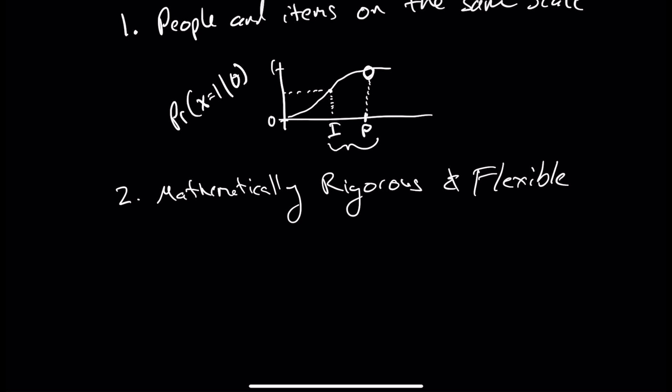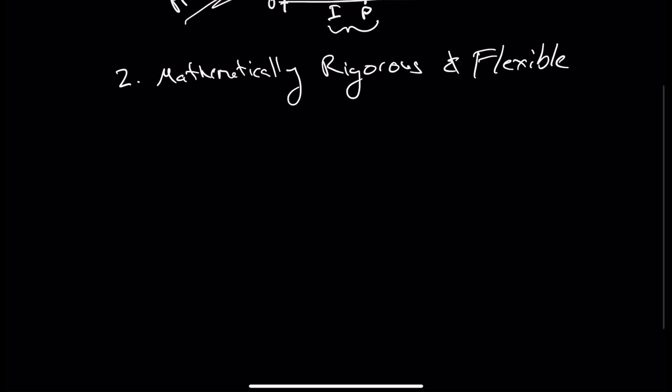And so now this probability of responding has a very mathematically rigorous form to it that we can describe. And so we can say that the probability of responding, say, one, or just an item response that's coded one,